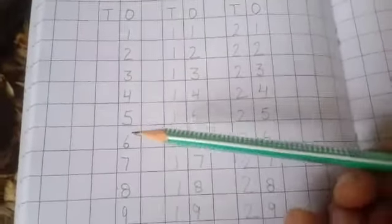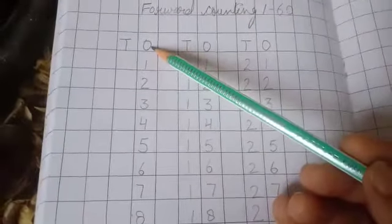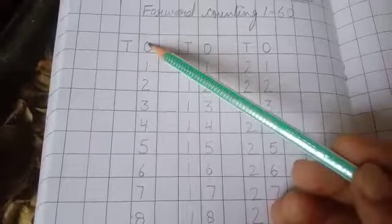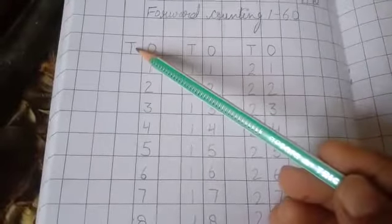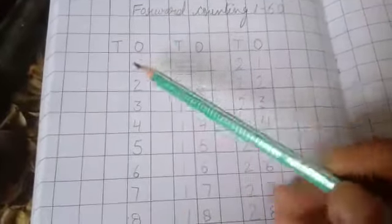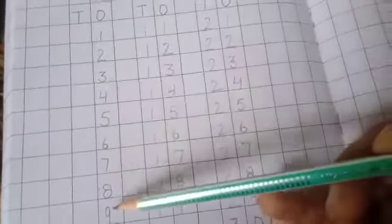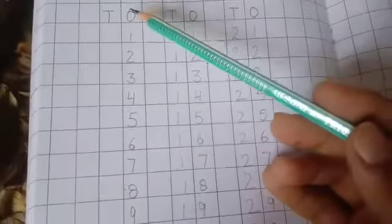And when you write the counting you have to follow the 10s and 1s. 1s and 10s. O for 1s and T for 10s. So you have to follow these rules. It means single digit numbers come below the 1s and double digit numbers come below the 10s and 1s.